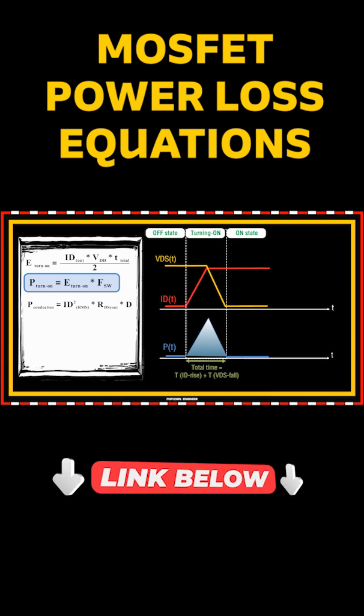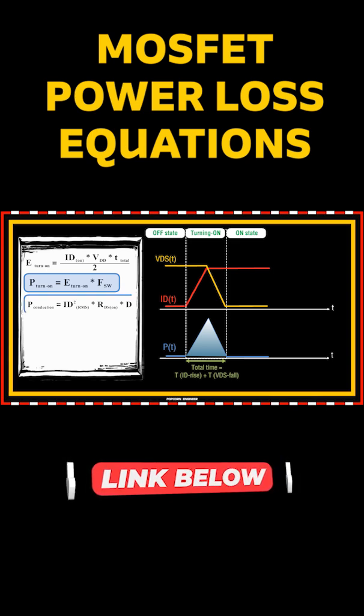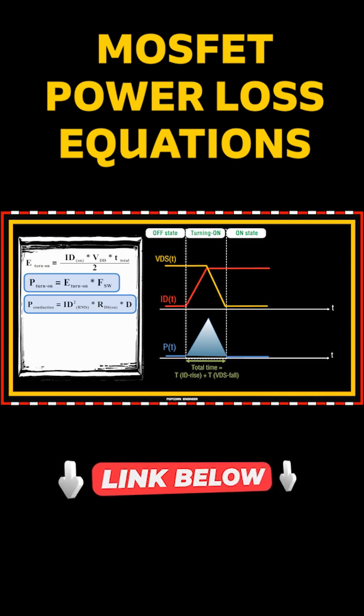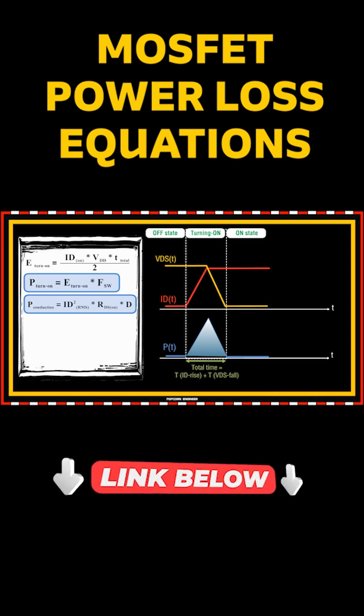As you see from this equation, the conduction losses depend on RDS_on value. Then it's critical to choose a MOSFET with low RDS_on.